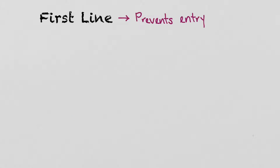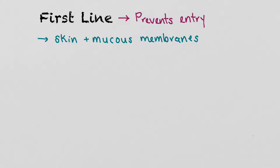The first line of defense prevents entry of a pathogen into the body in the first place. It consists of the skin and mucous membranes. Anything on the surface of our body is still considered outside until it has gained a portal of entry inside. This includes inside our mouth, the tube of our digestive system, and our breathing tissues — all of those are still external. It's not until we've absorbed the pathogen into our bodies that it's considered inside.